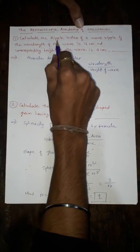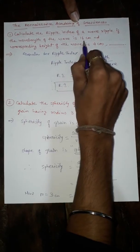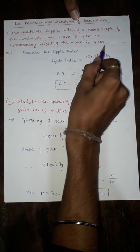First is, calculate the ripple index of a wave ripple if the wavelength of the wave is 16 cm and corresponding height of the wave is 4 cm.